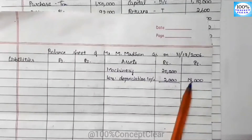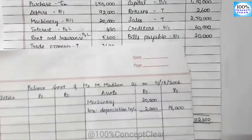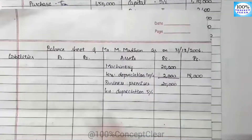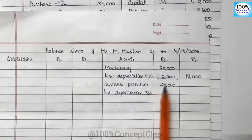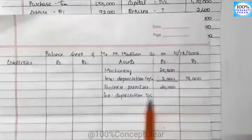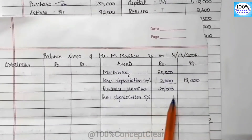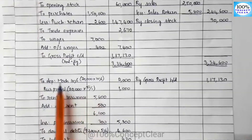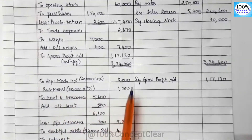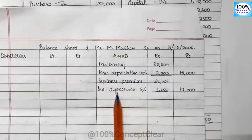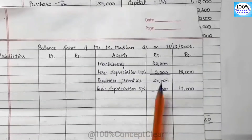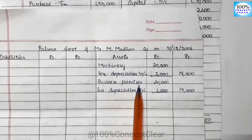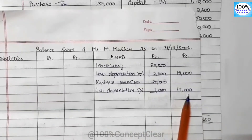Next, business premises original value is $20,000. We have to provide 5% depreciation. The amount goes to P&L account. Business premises 5% depreciation is $1,000. So $20,000 minus $1,000 equals $19,000 — that is the business premises value in the Balance Sheet.